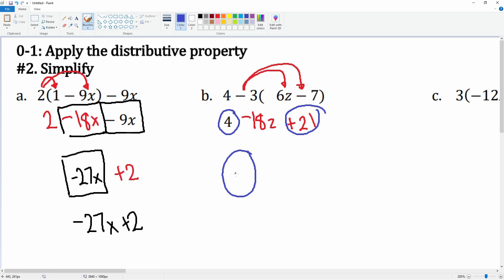4 plus 21 is 25. Nothing happens to that negative 18z, so the final answer can be written as 25 minus 18z.